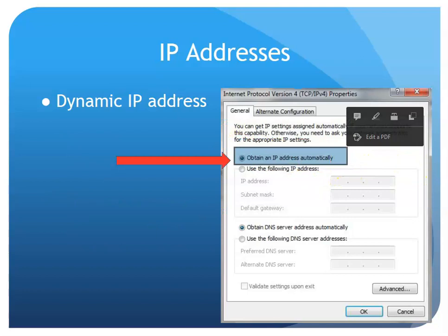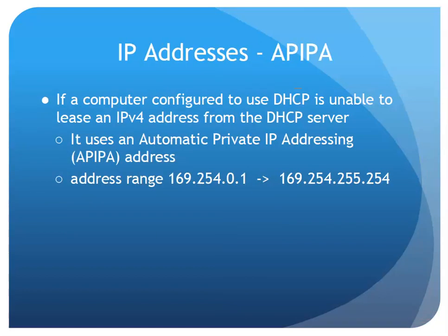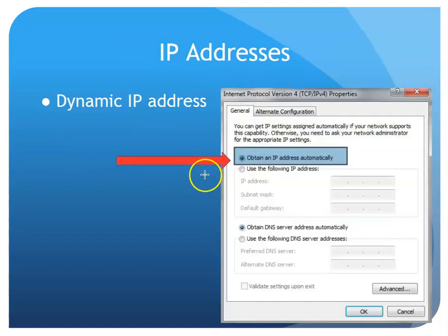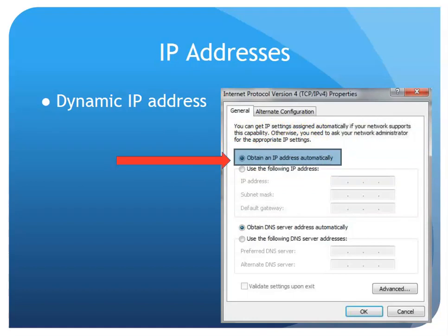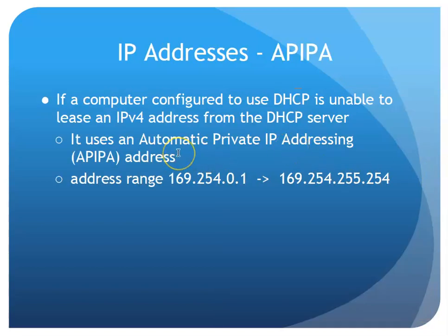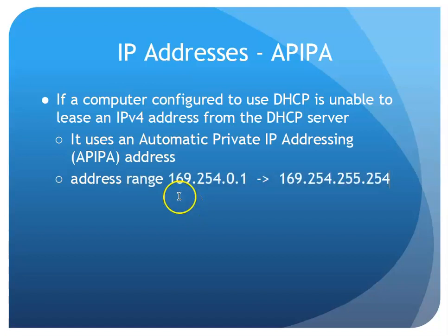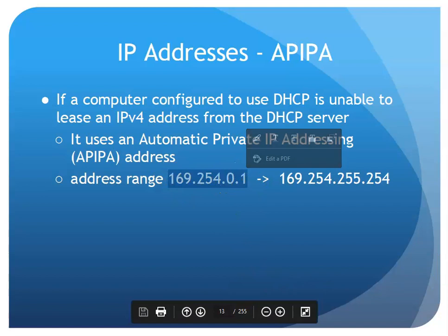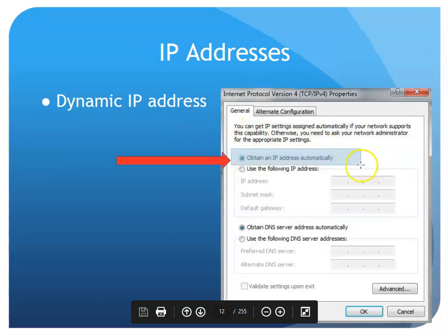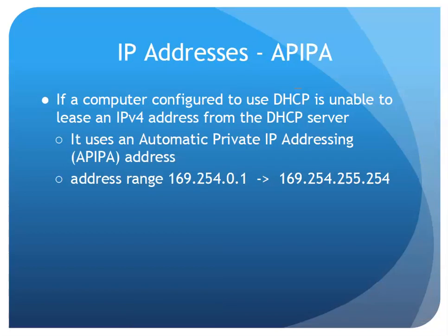When we set 'obtain IP address automatically,' we're doing a dynamic IP address setting, and something like a DHCP server hands it an IP address to borrow for a while. If a computer is set for dynamic and tries to get an address from the DHCP server but can't — maybe the server is off or there's a connection issue — the PC will typically assign itself an APIPA address. That number range is the 169.254 range. If I see a 169.254 address, that usually indicates there's a problem: I'm set for dynamic and can't get to a DHCP server.